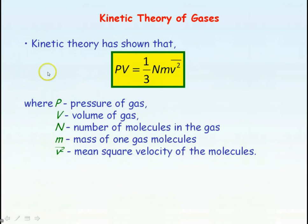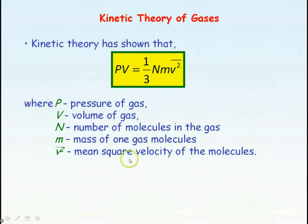The kinetic theory of gases shows that PV equals one third Nm V squared. You don't need to know the proof of this, but what you do need to know is that pressure times volume is directly proportional to V squared — the square of the velocity of the gas molecules. From this, we can derive an equation that links the average kinetic energy of the gas molecules with temperature.